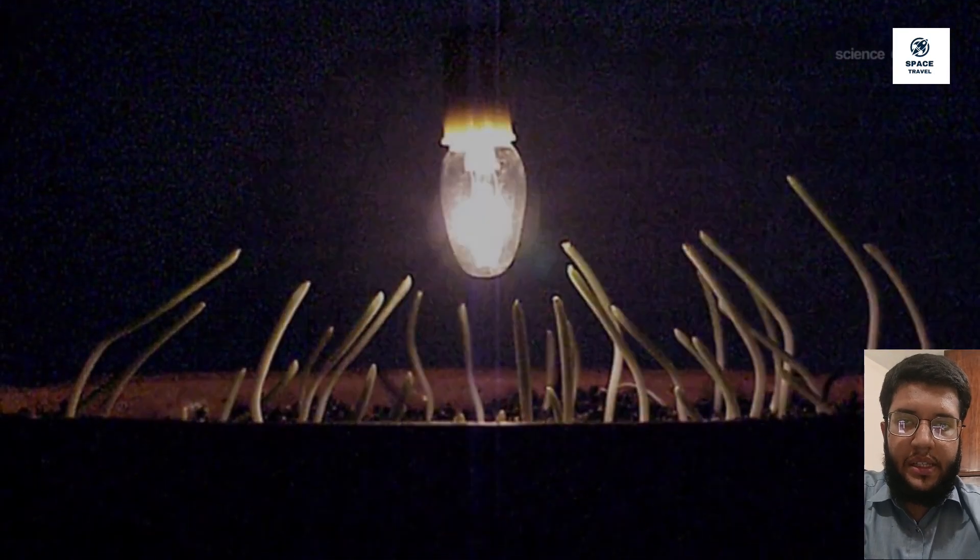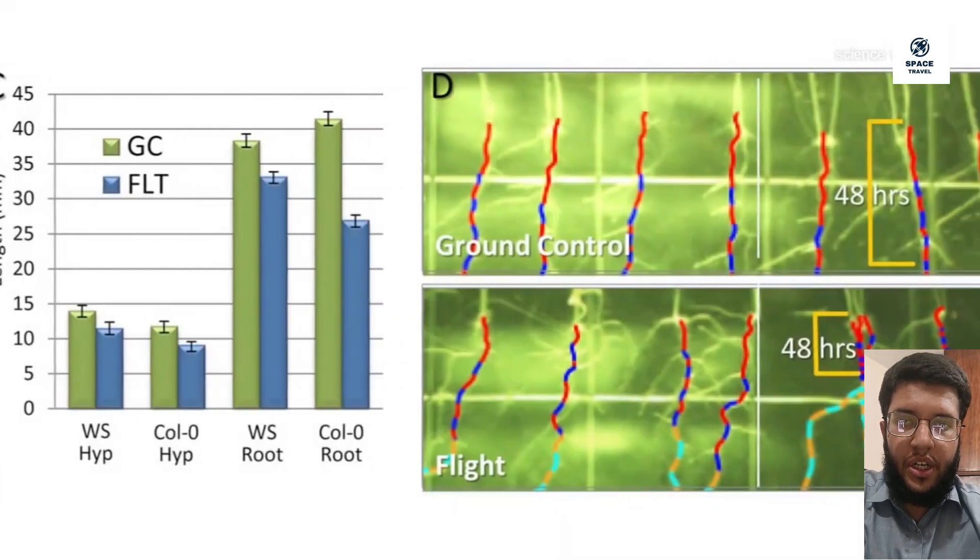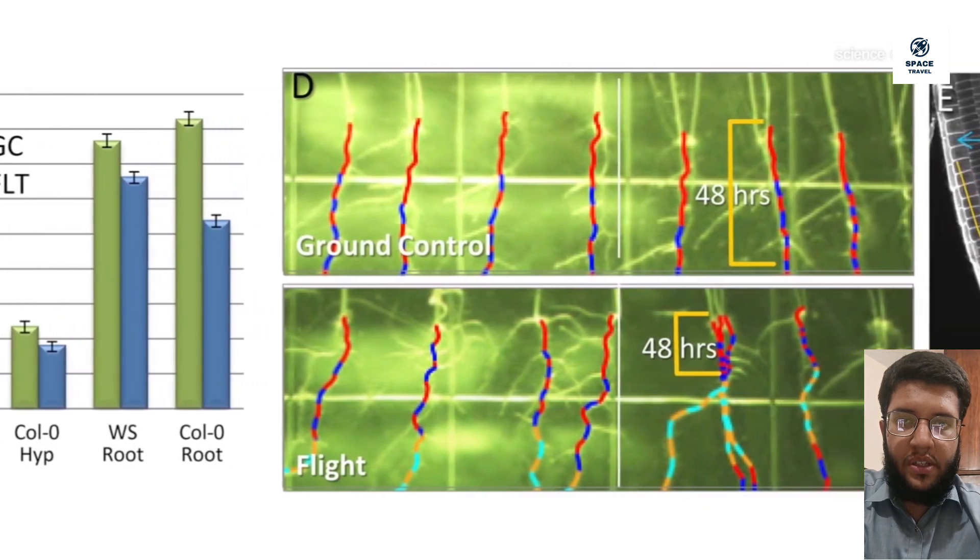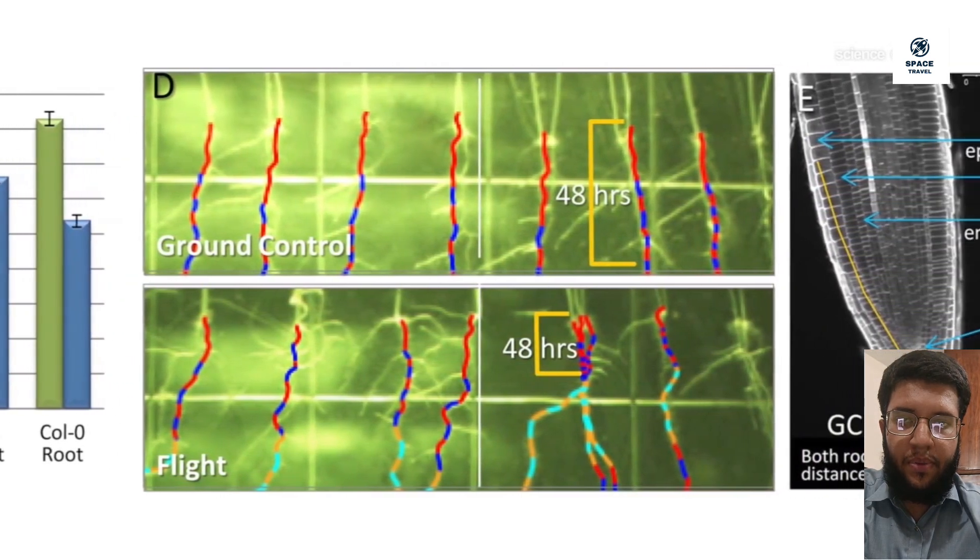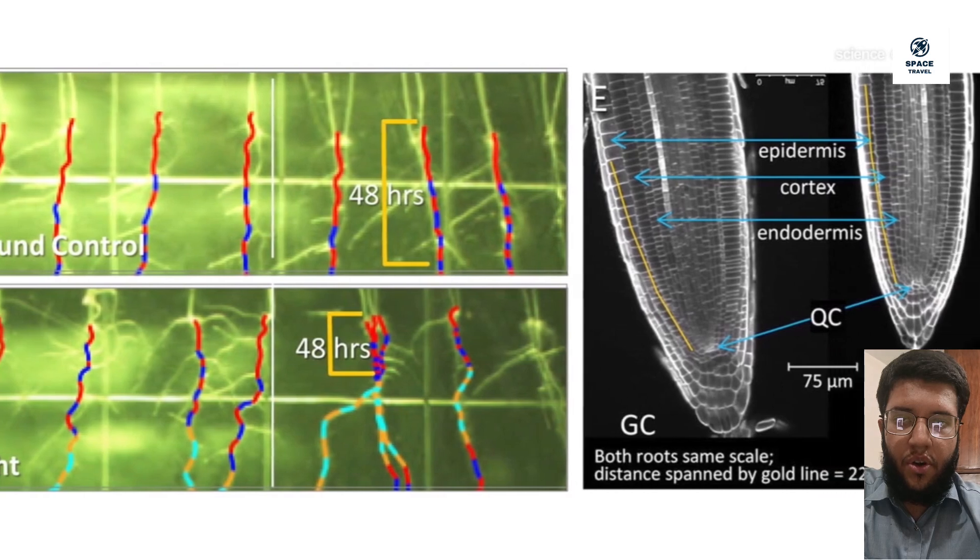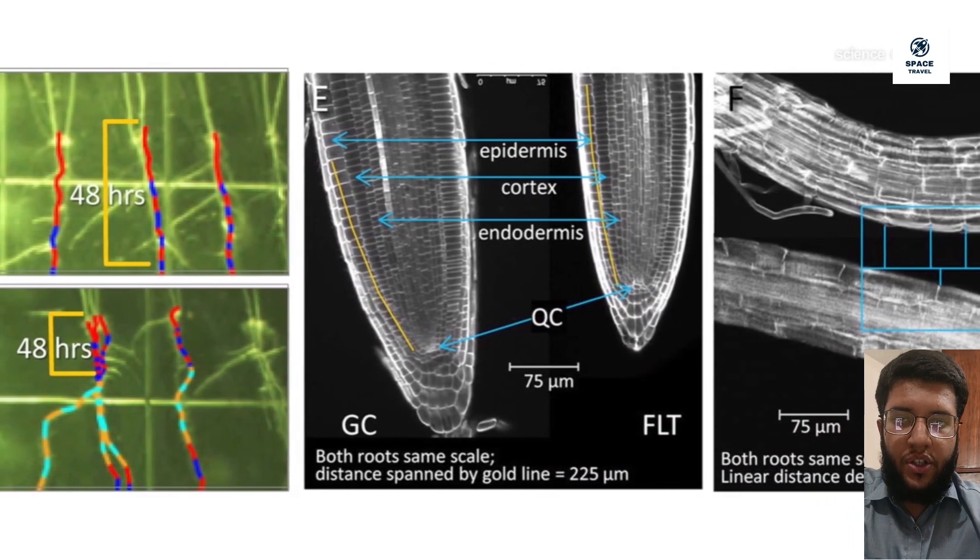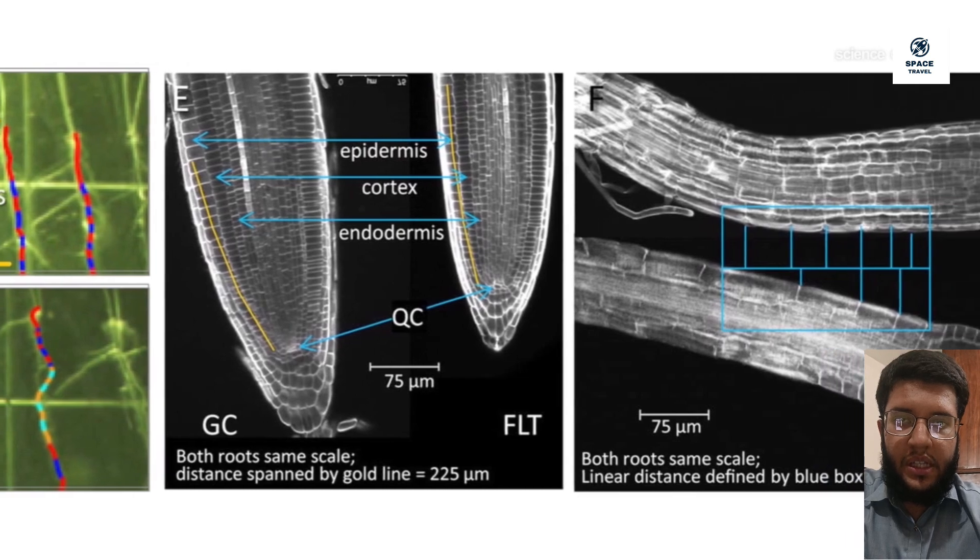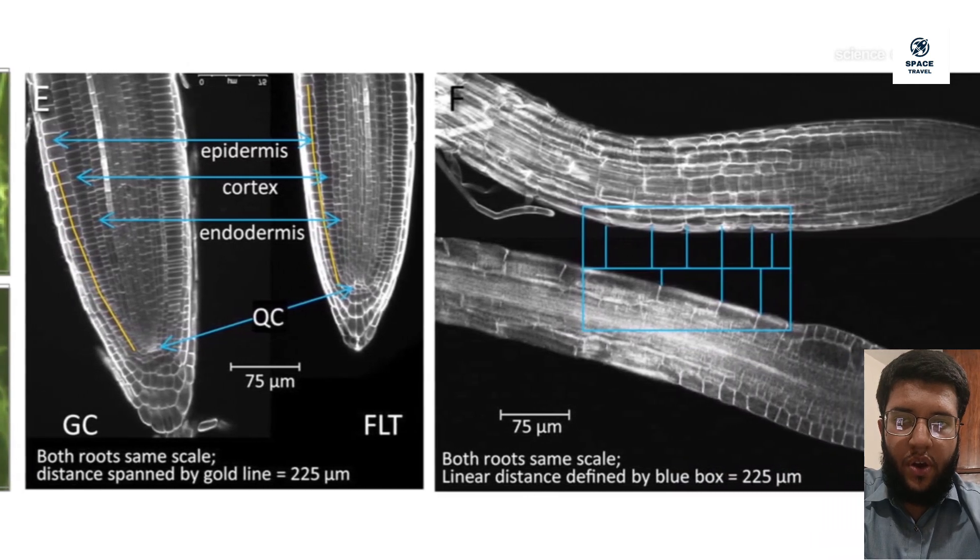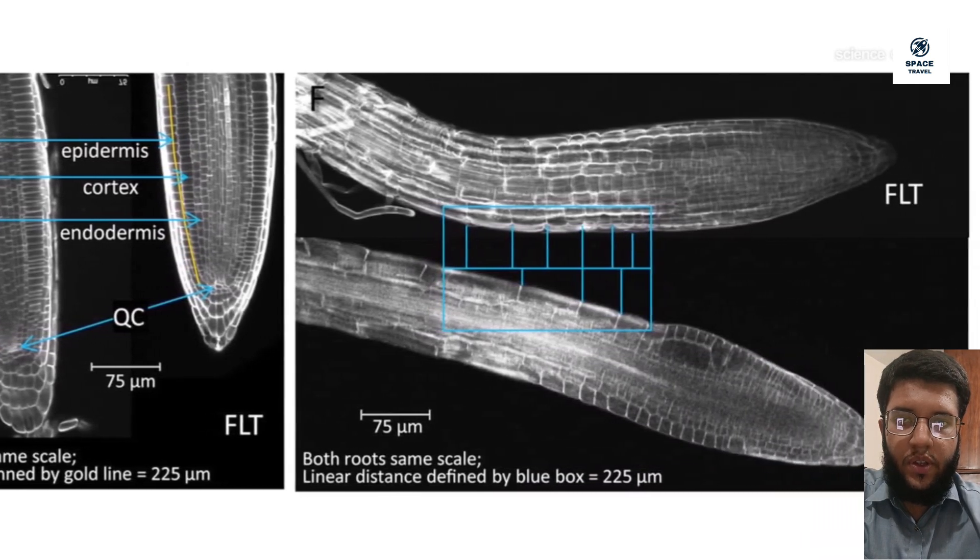Paul and Ferl inserted a glowing reporter gene into the DNA of Arabidopsis that would be triggered by the plant hormone auxin. Auxin is important to how plants move and respond to their environment. By watching parts of Arabidopsis light up, they track the progress of the hormone at the cellular level without actually dissecting the plants.